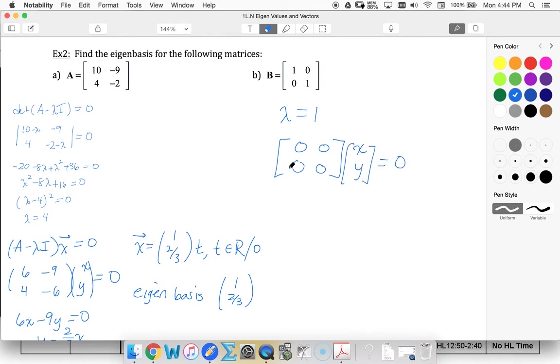So this is interesting because I have the 0 matrix here. That means both X and Y are independent variables. It doesn't matter what they are.